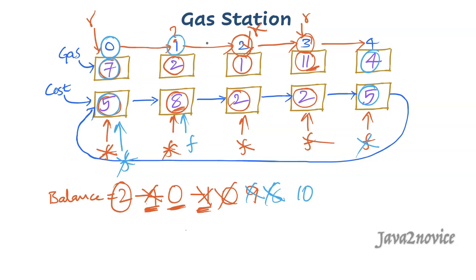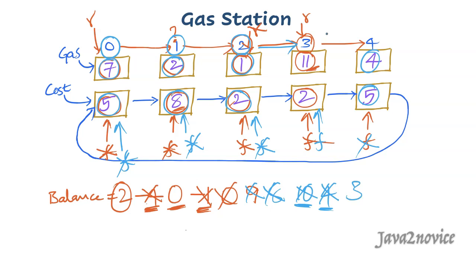From index 1 to index 2 we need 8 units, only 2 are available, but we have 10 in balance — we can move. Then from index 2 to index 3 we need 2 units, only 1 is available, but we have enough balance. After this the balance is 3 units. We have already reached our starting point. If you start your journey from this index you can complete the trip successfully. This index is the answer — just return the rear pointer.